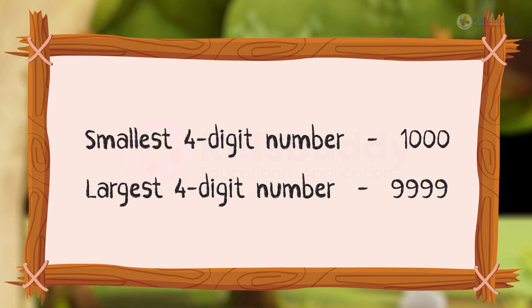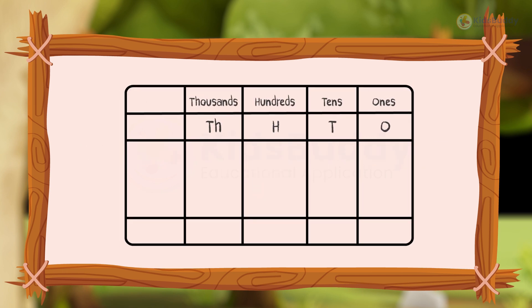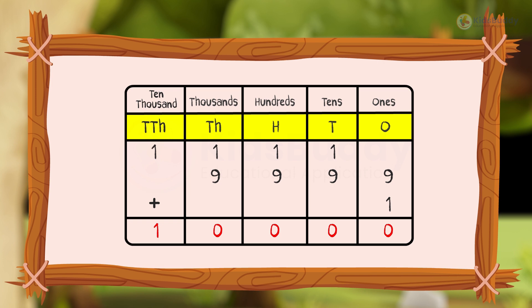Let us begin our lesson by understanding what 5-digit numbers are. When we add 1 to the biggest 4-digit number 9999, we get the smallest and first 5-digit number 10,000. 5-digit numbers are placed in the 1's, 10's, 100's, 1000's, and 10,000's columns.